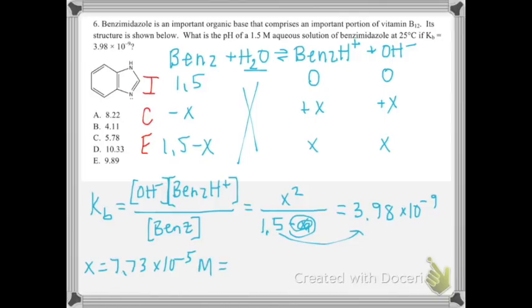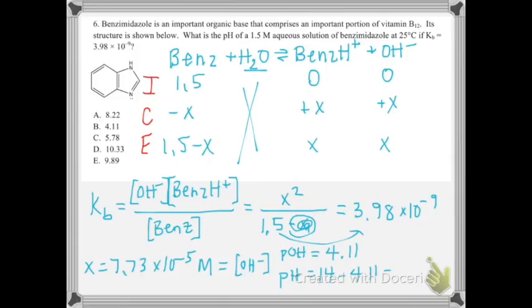That X value is the concentration of hydroxide. Taking the negative log of that gives pOH = 4.11. Then pH = 14 − 4.11 = 9.89, which is answer E.